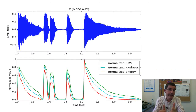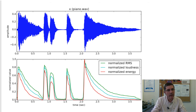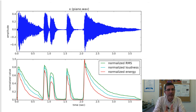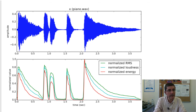Here we see these three energy-related features computed from a piano sound. We analyze these measures throughout the whole sound, one frame at a time. They are very much correlated since they are all energy-related, but there is quite a bit of difference between them. Other measures more related to perceptual issues might result in a different type of function, but these are quite useful for measuring energy or loudness of a complete sound.